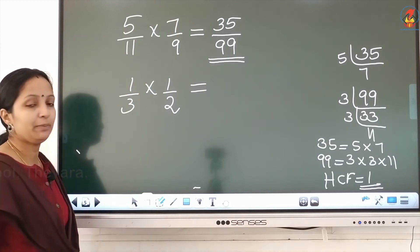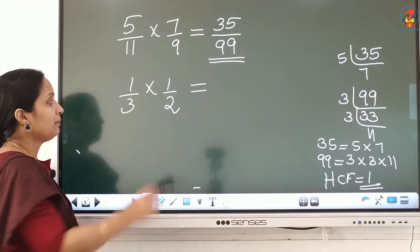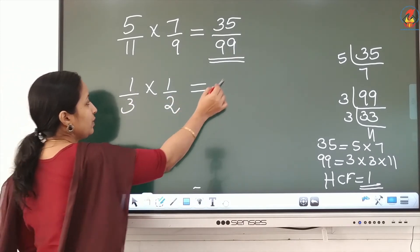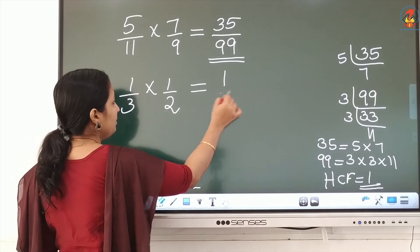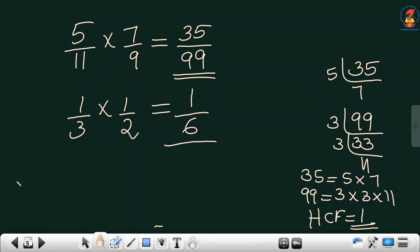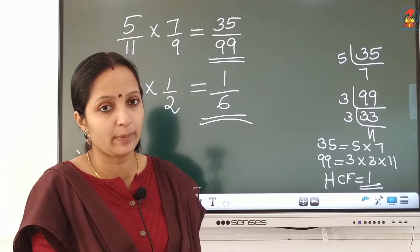Now 1 by 3 into 1 by 2: multiply the numerators — 1 into 1 equals 1. Multiply the denominators — 3 into 2 equals 6. The answer is 1 by 6. I think the multiplication of a fraction by a fraction is clear for everyone: multiply the numerators, multiply the denominators.